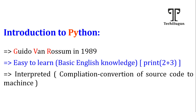Whenever we talk about a programming language, it either comes under an interpreter-based programming language or a compiler-based programming language. First, let us understand what compilation is. Compilation is the process of conversion of source code to machine code. Whatever code we are writing is source code, and whatever the machine understands is machine code — that is binary language.